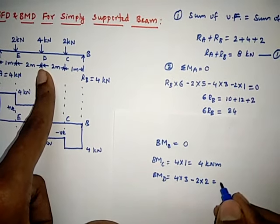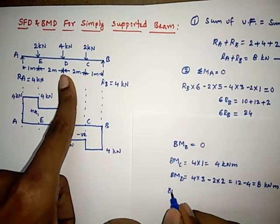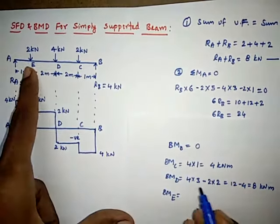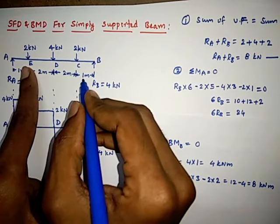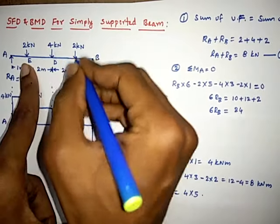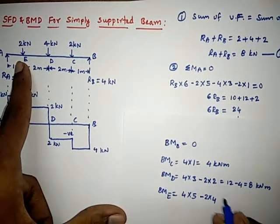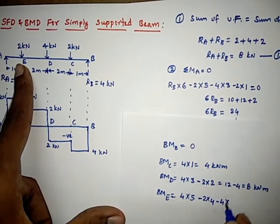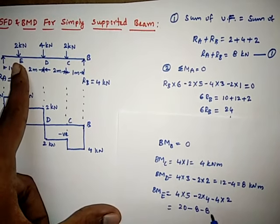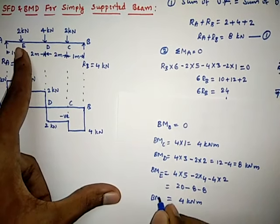Bending moment at E: +4 × 5 = 20 (sagging from Rb), minus 2 × 4 = 8 (hogging from 2 kN load), minus 4 × 2 = 8 (hogging from 4 kN load). So BM at E = 20 − 8 − 8 = 4 kN·m.